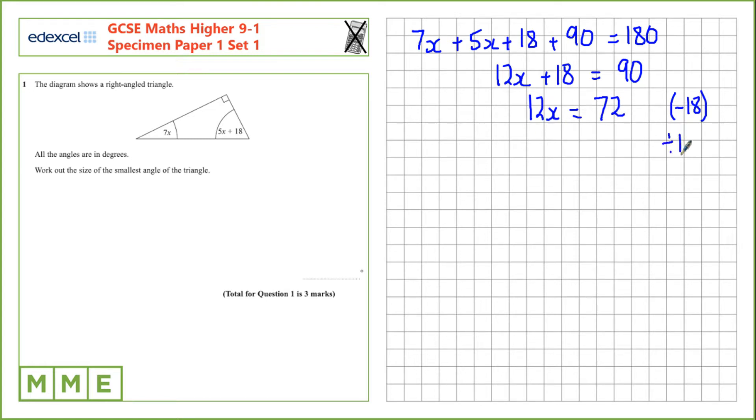Let's divide by the coefficient in front of x. So 12x divided by 12 is x, and 72 divided by 12 is 6.